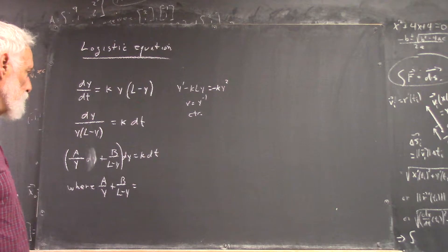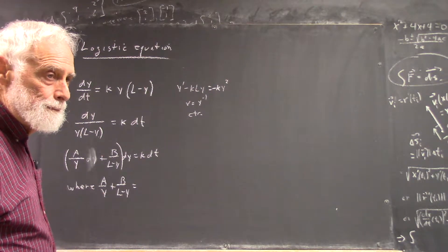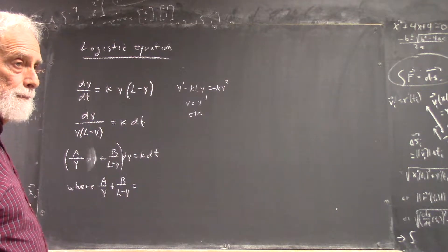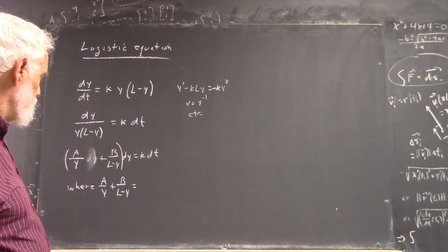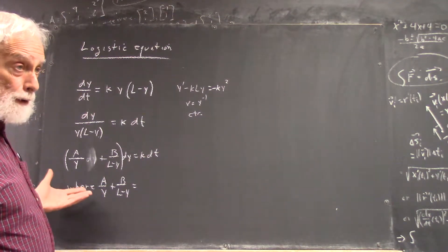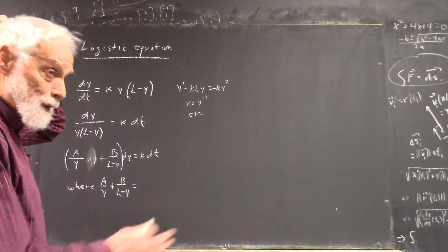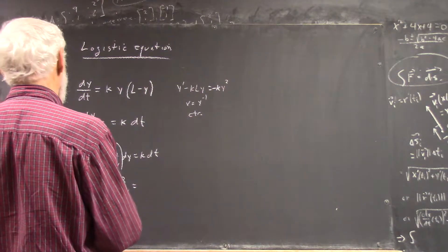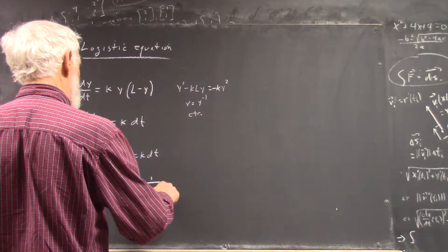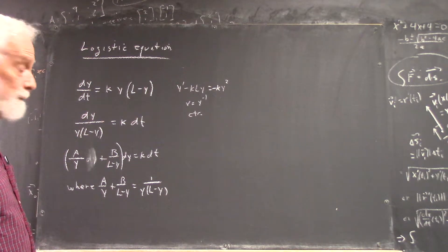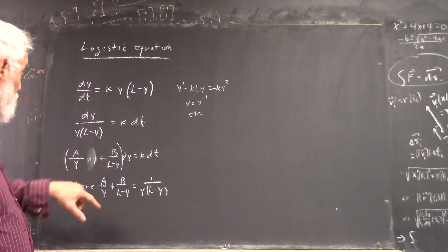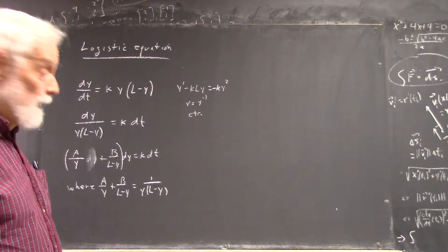What's a over y plus b over L minus y going to have to equal? That's one thing it equals. Sounds good. And you did that in your head, which is really good. And I think what I heard was right. But, just from here and here, this has to equal 1 over y times L minus y, right? Because the only difference between this and this is that I've replaced the reciprocal y times L minus y with the a over y plus b over L minus y. And you've done enough partial fractions that you know exactly what I'm doing.